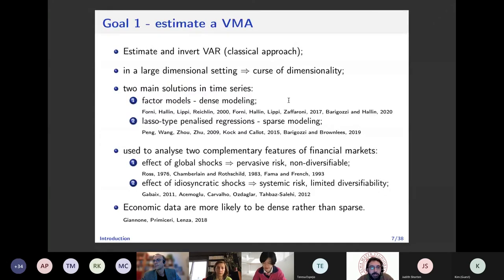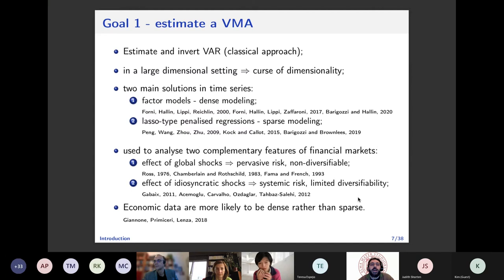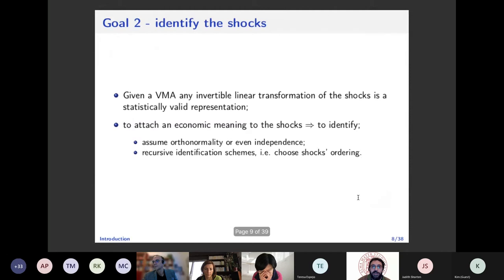A paper by Giannone, Primiceri, and Lenza found that economic data are more likely to be dense rather than sparse, which is debatable. What we believe — and what has been found on this kind of data — is that a factor structure is important. So the main message is: first, control for common factors. The second challenge is identification of the shocks, which I will leave to questions due to time constraints.